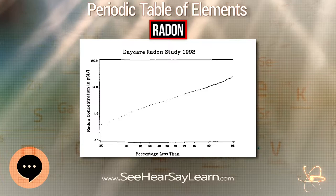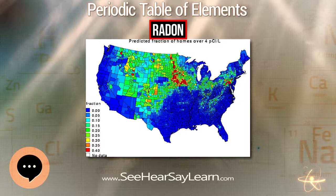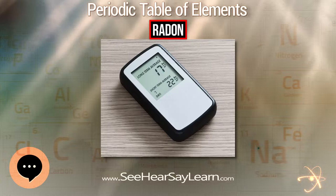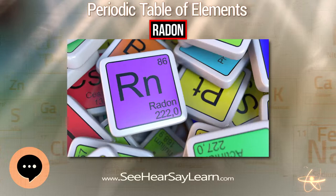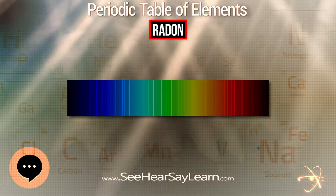Its most stable isotope, 222Rn, has a half-life of only 3.8 days, making radon one of the rarest elements since it decays away so quickly. However, since thorium and uranium are two of the most common radioactive elements on Earth and have three isotopes with very long half-lives on the order of several billions of years, radon will be present on Earth long into the future, as it is continually being generated.